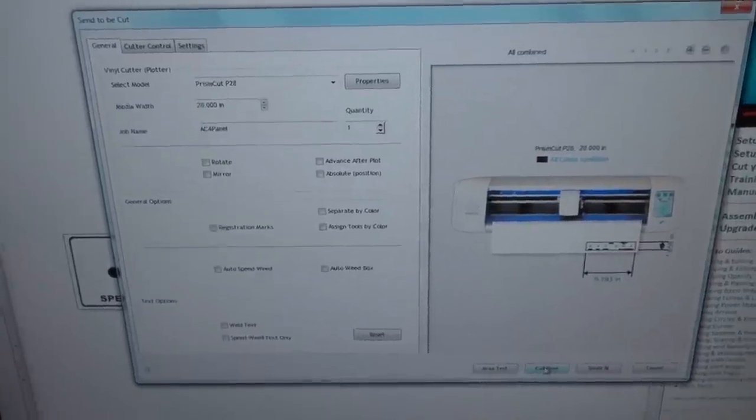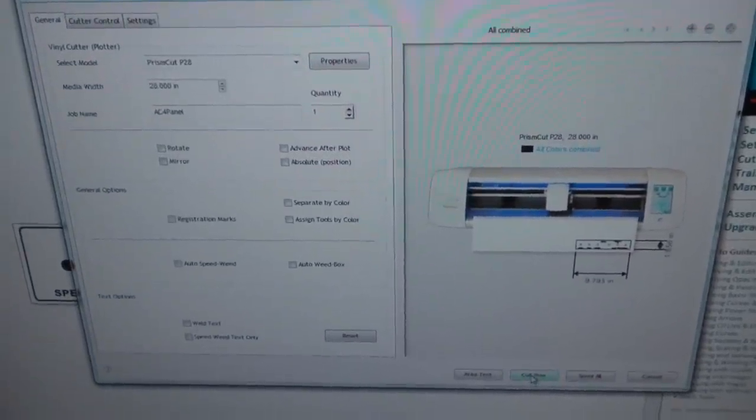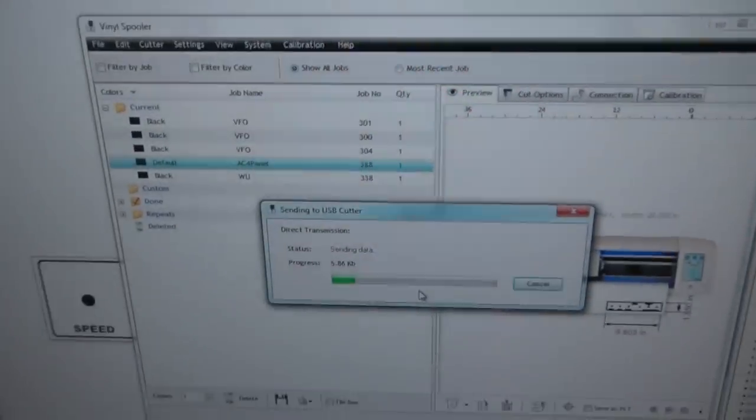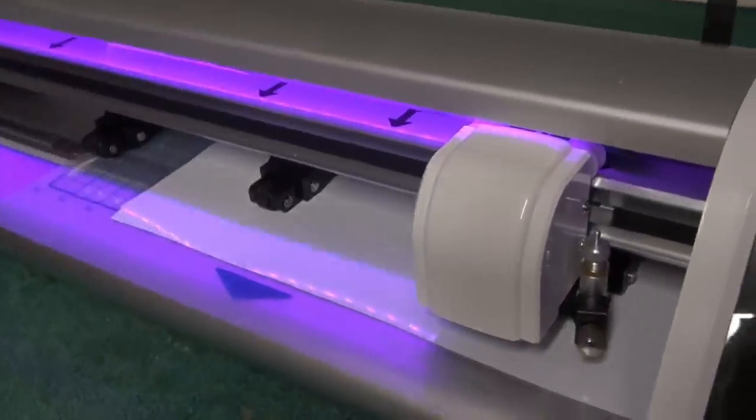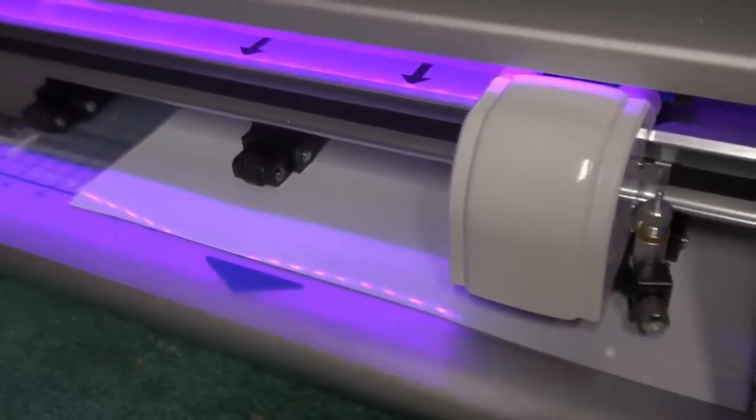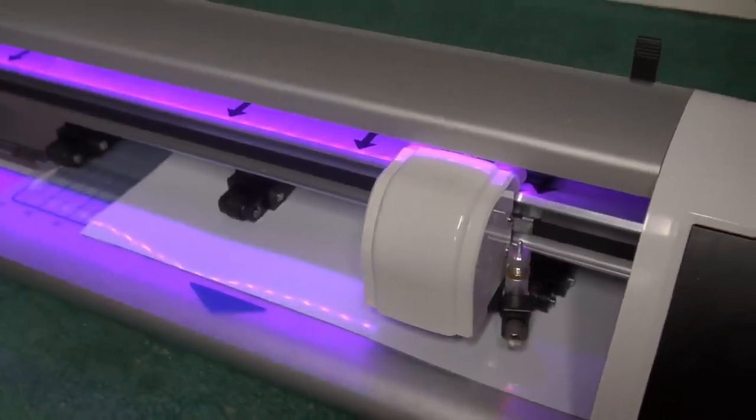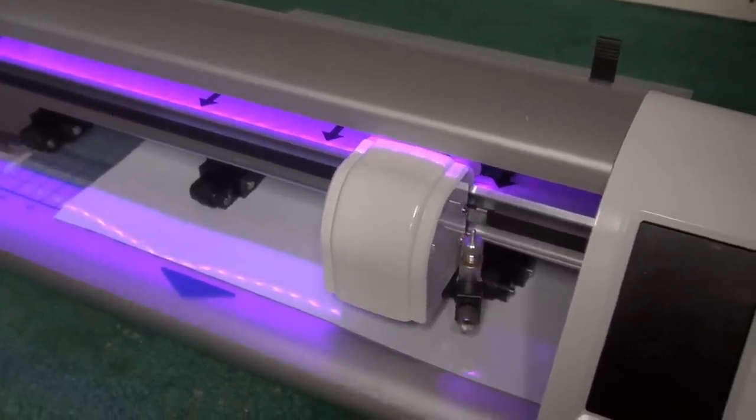Alright I've spooled up the artwork and it's just waiting for me to tell it to cut. Here we go. Cutter is moving. Let's check it out. So in a few minutes I'll have a vinyl decal that I can apply to the control panel.